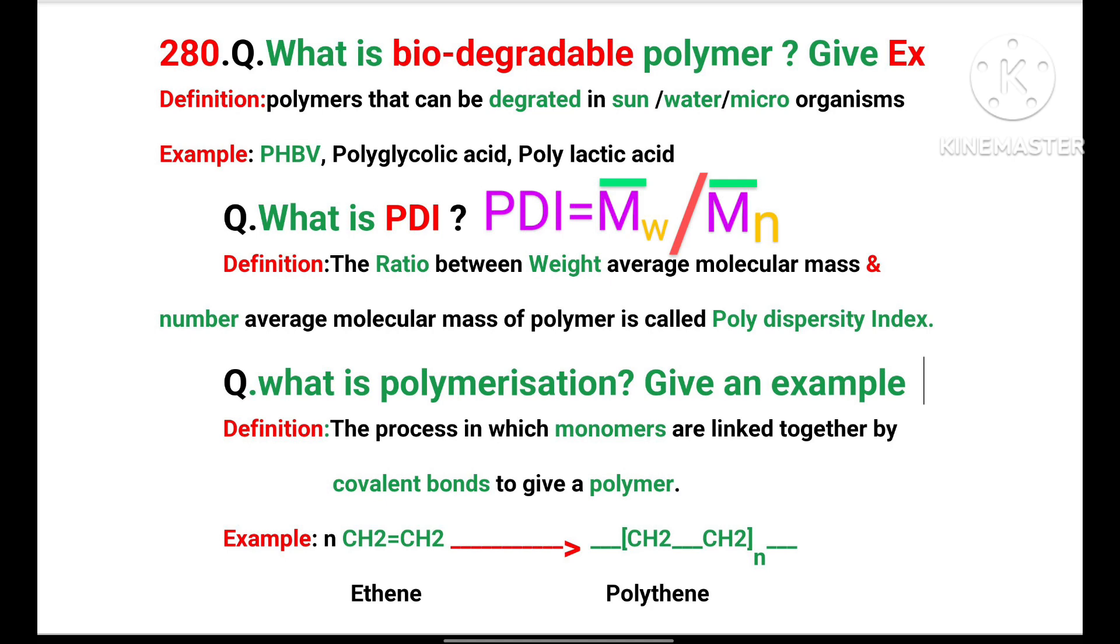Polymers that can be degraded or decomposed in sunlight, water, or by microorganisms are known as biodegradable. Bio means life. Examples include PHBV, Polyglycolic Acid, and Polylactic Acid. What is PDI?